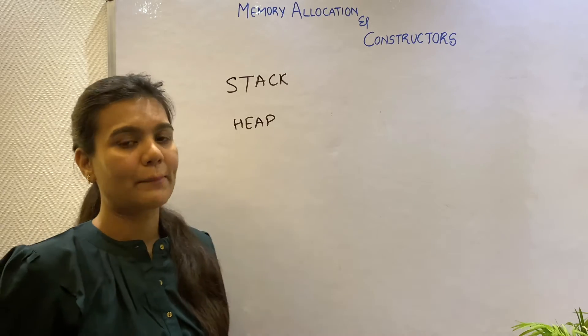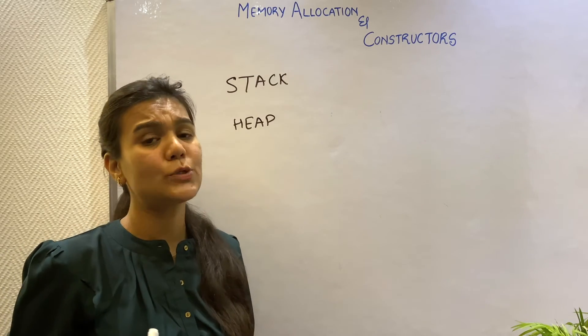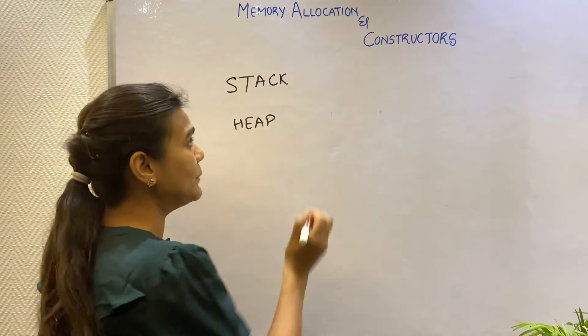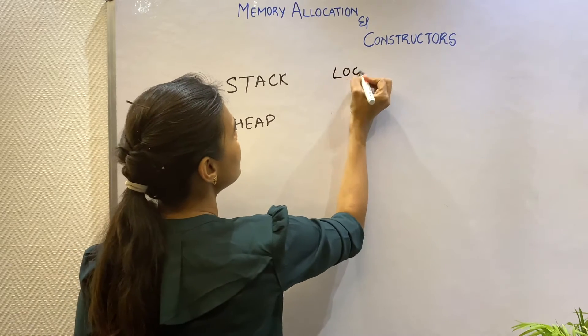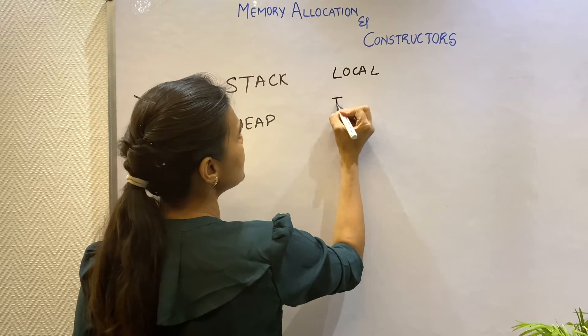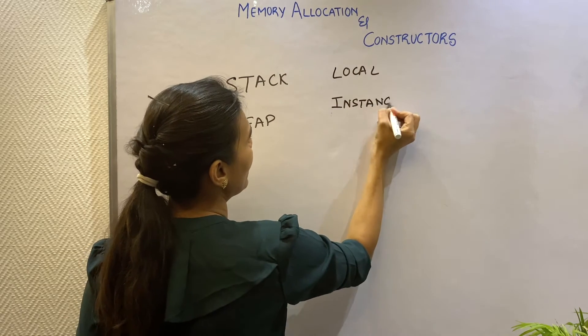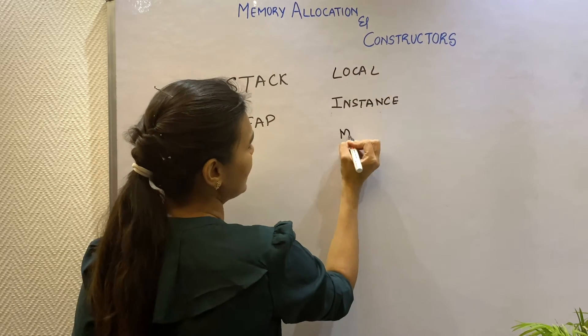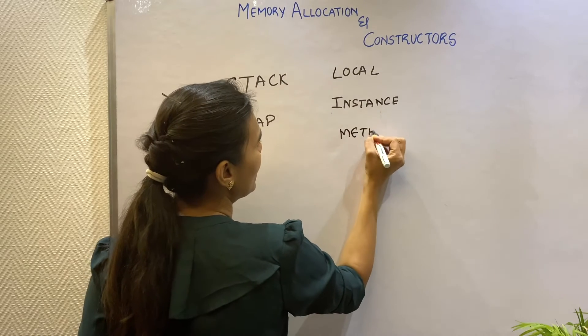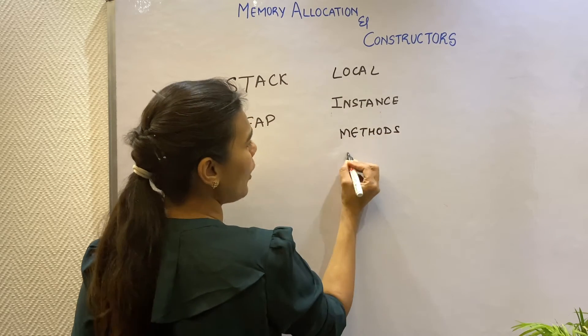And in every program, there are four entities that need to live on this memory, namely local variables, instance variables, methods that execute, and objects.